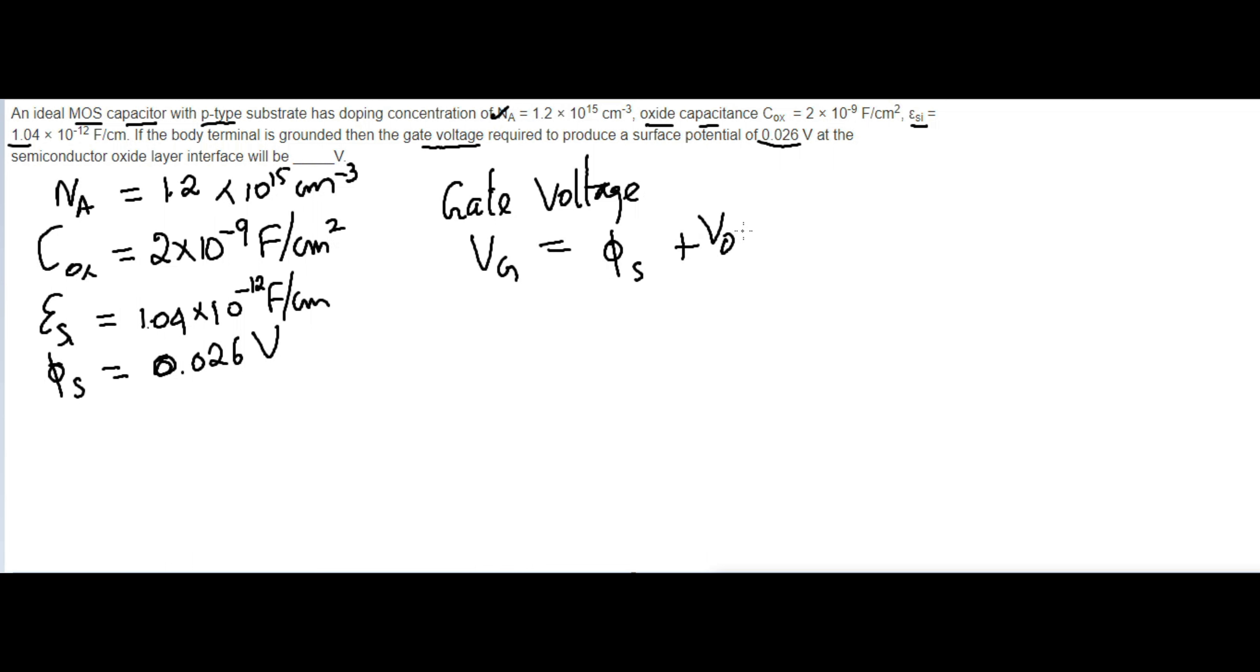The formula for VOX is: VOX equals the square root of 2q·NA·εsi·φs divided by COX, where q is the charge of an electron, NA is the doping concentration, epsilon_si is the permittivity, and φs is the surface potential.